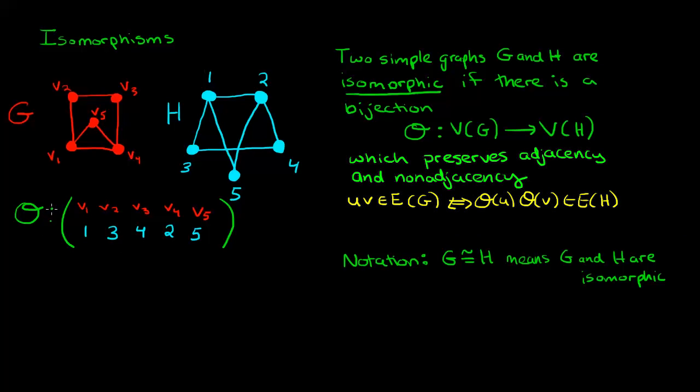So you can think of this map θ as really telling you that this vertex v1 should be sent over here to this vertex 1 in this other graph H. And if we pick another example like v3, v3 needs to be sent to vertex 4. In a moment we're going to take a look at why this mapping is indeed a bijection, but for right now let's just look at whether it actually preserves the adjacency.